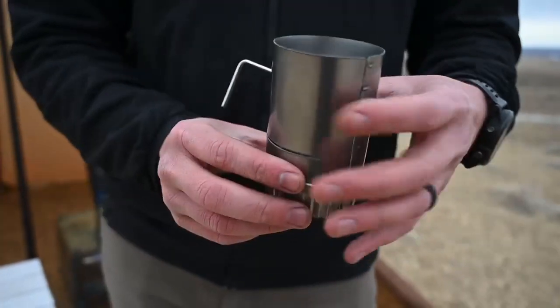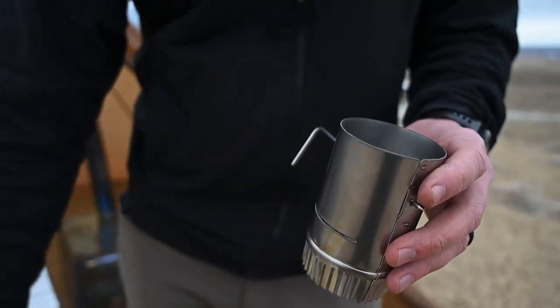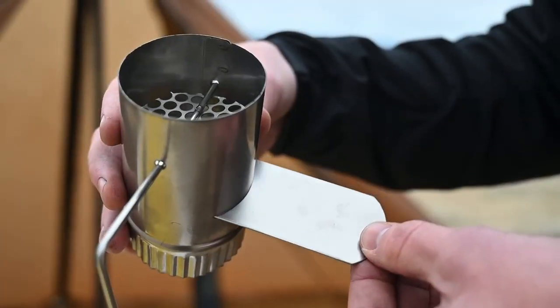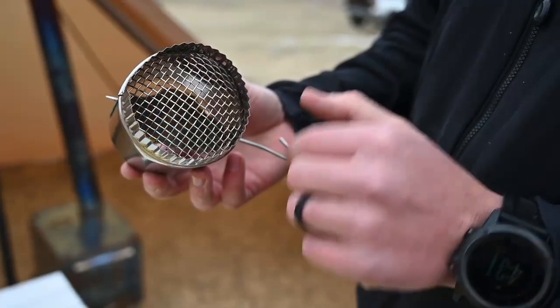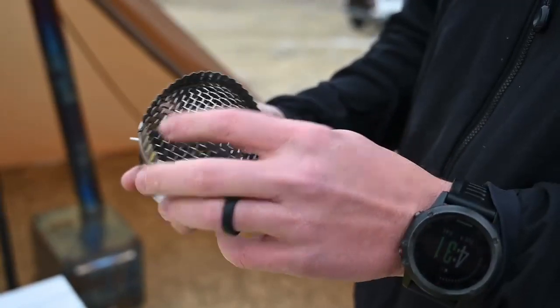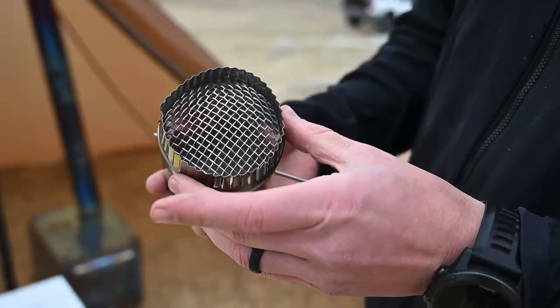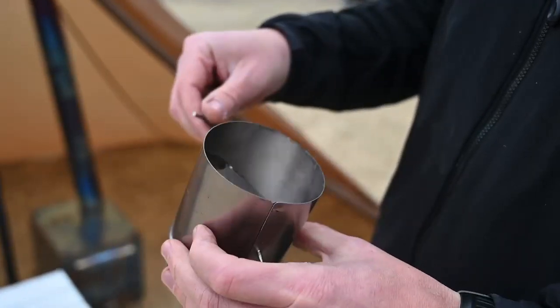A slide-in damper flap solved that problem. Next we took on the spark arrestor screen. Our previous damper utilized a spark arrestor screen that stayed in the damper but could be removed for replacement.